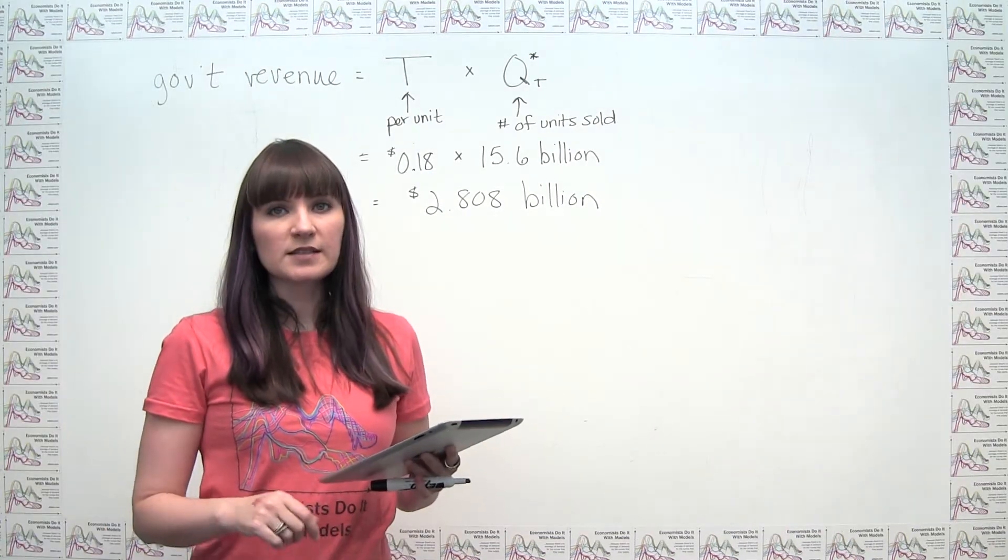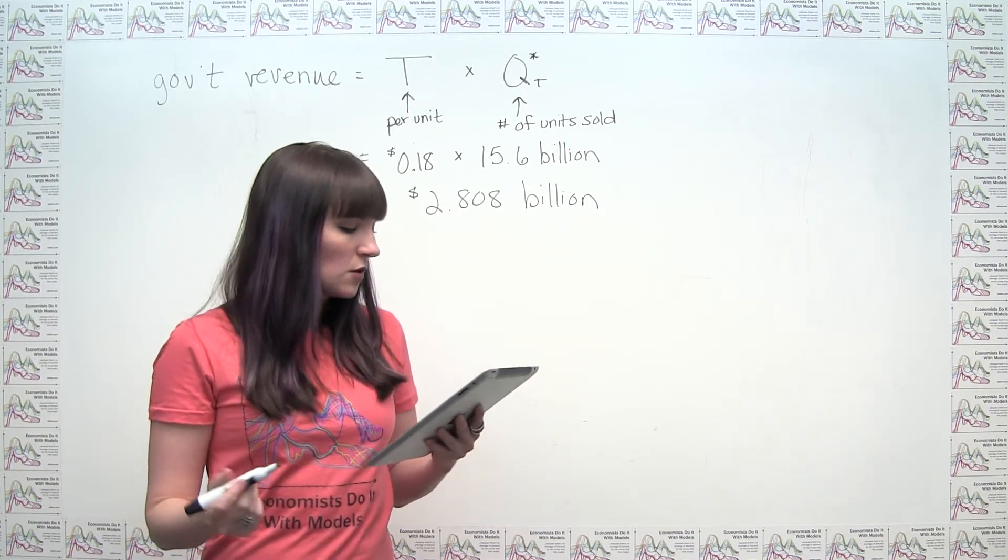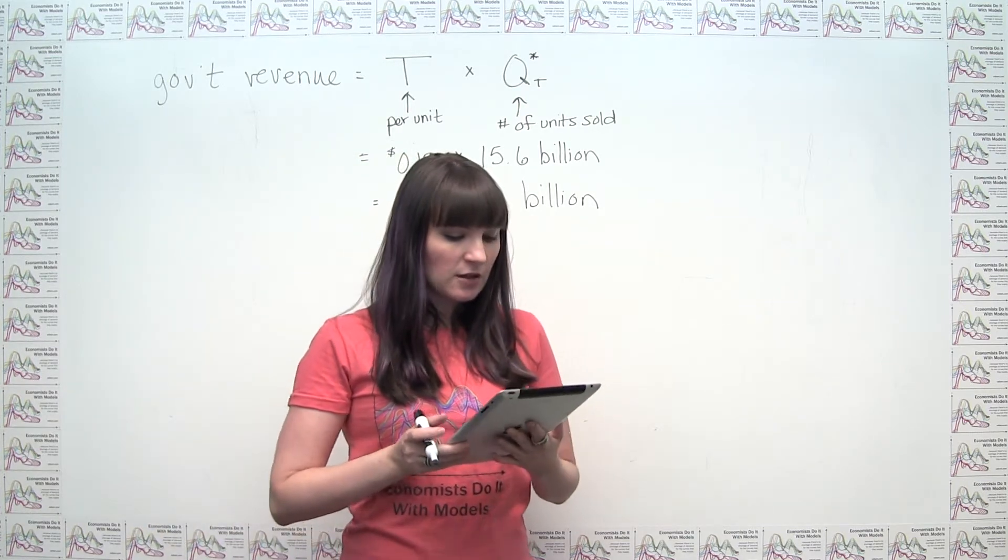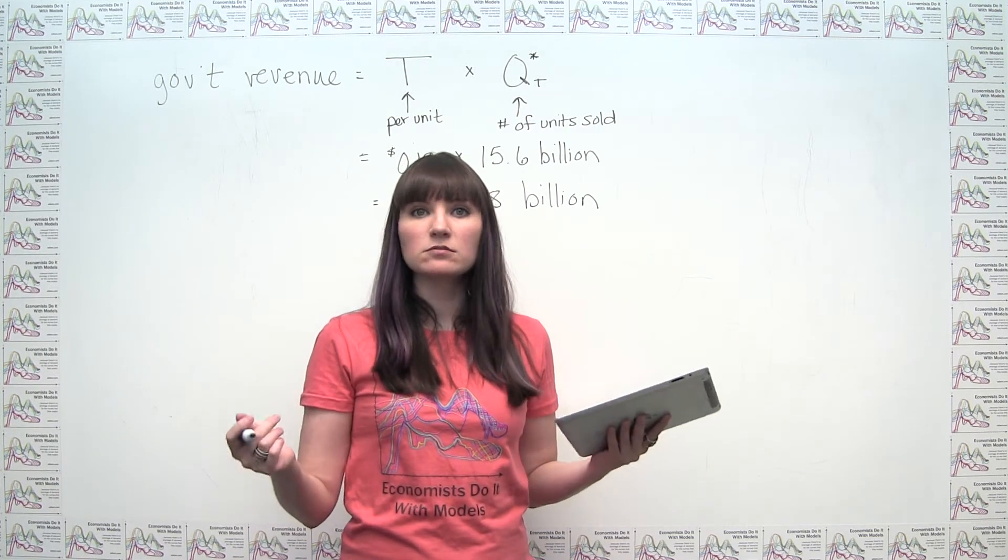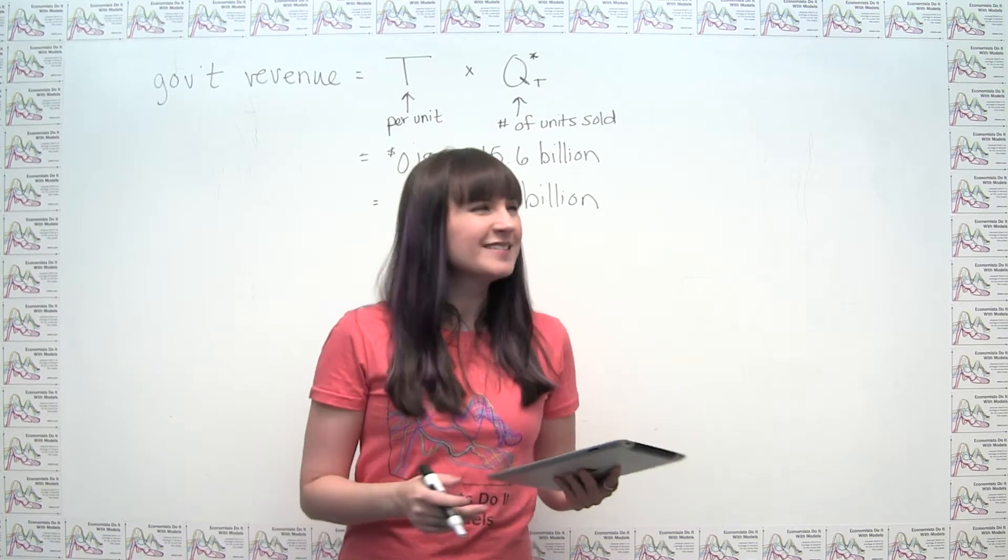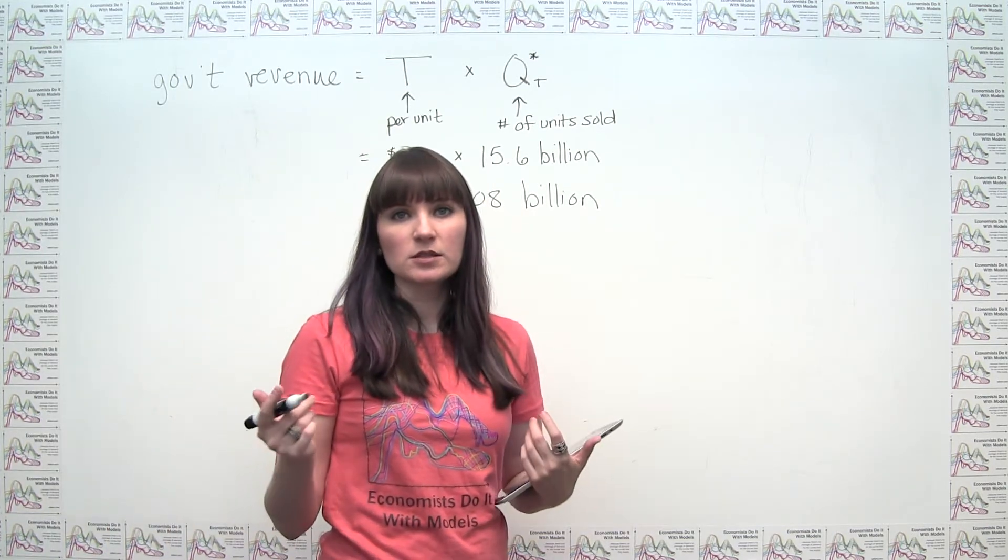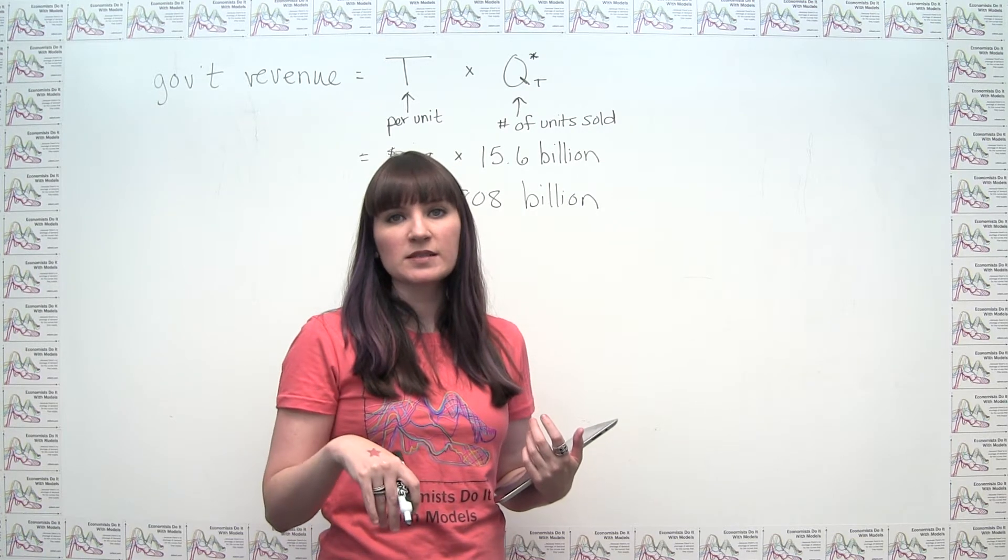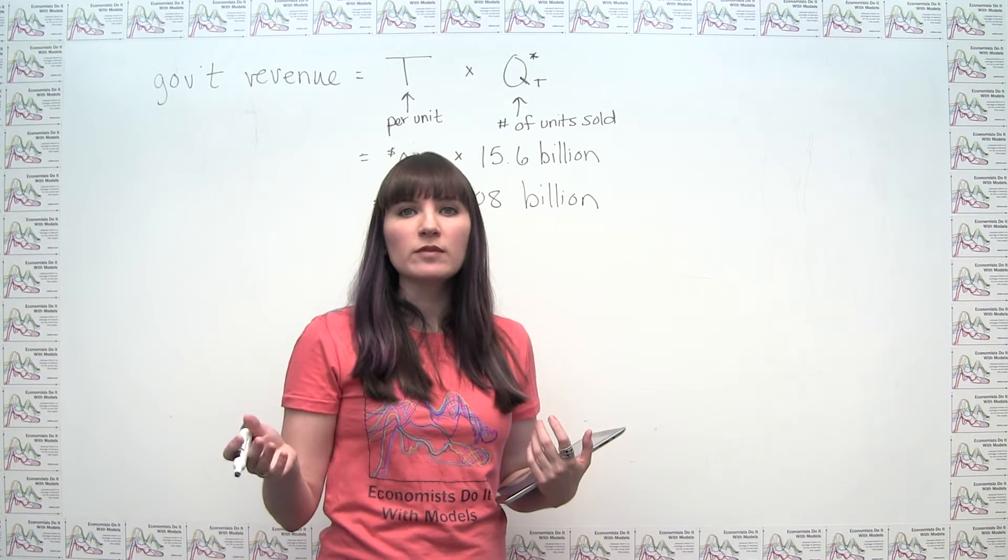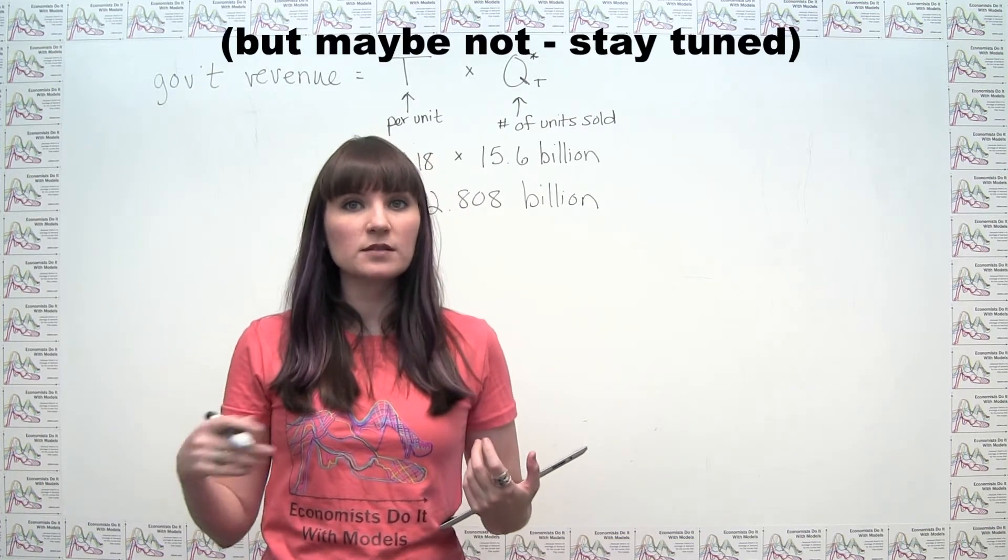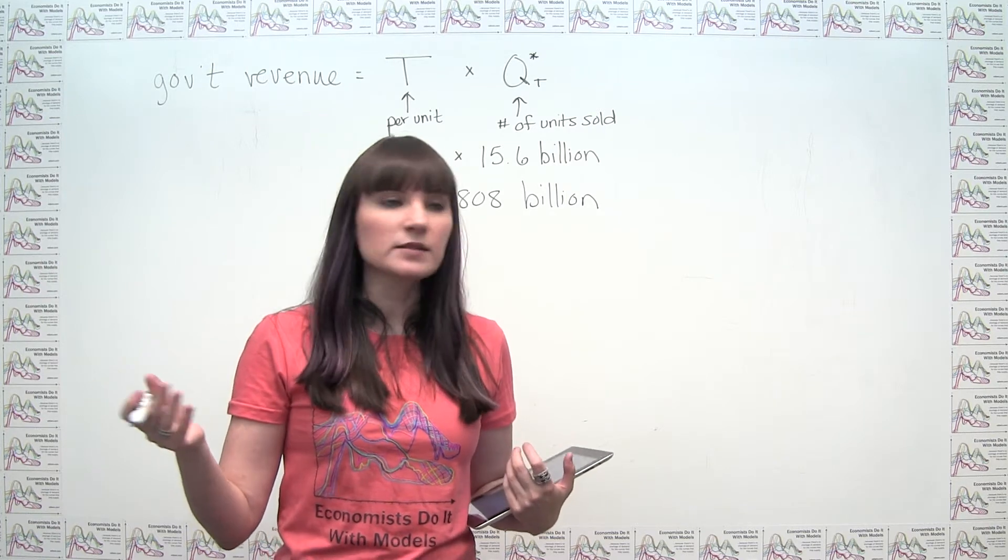The second question asked here actually asks us to do a little bit more economics. So the second part of the question says, if California doubled the excise tax, would tax revenue double? Why or why not? And it seems like actually a common mistake, for example, for policy makers to make is to say, we'll just make the tax twice as big, and we'll totally collect more revenue. They might collect more revenue, it would be a mistake to think that they'll collect twice as much revenue, and we can show exactly why that is.